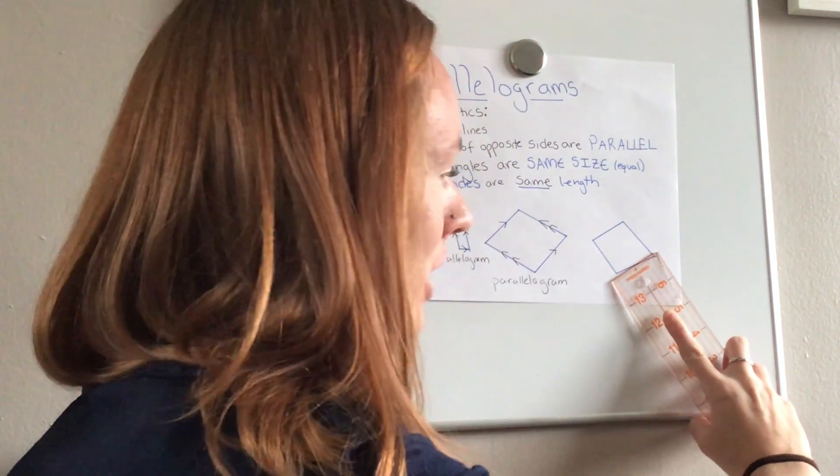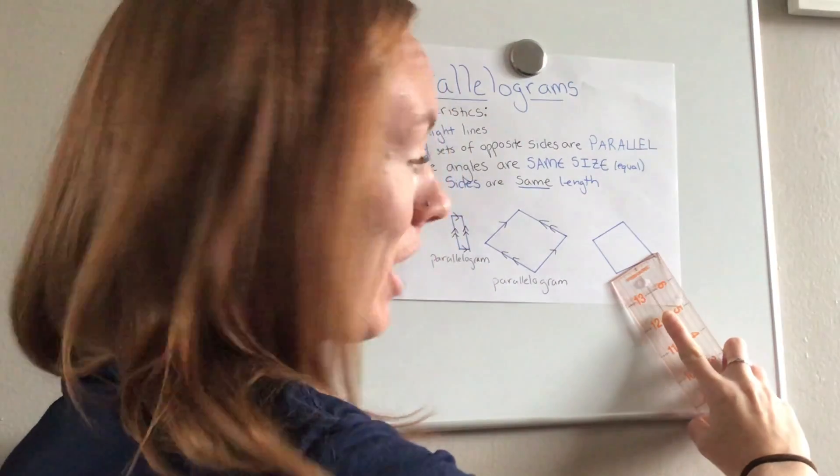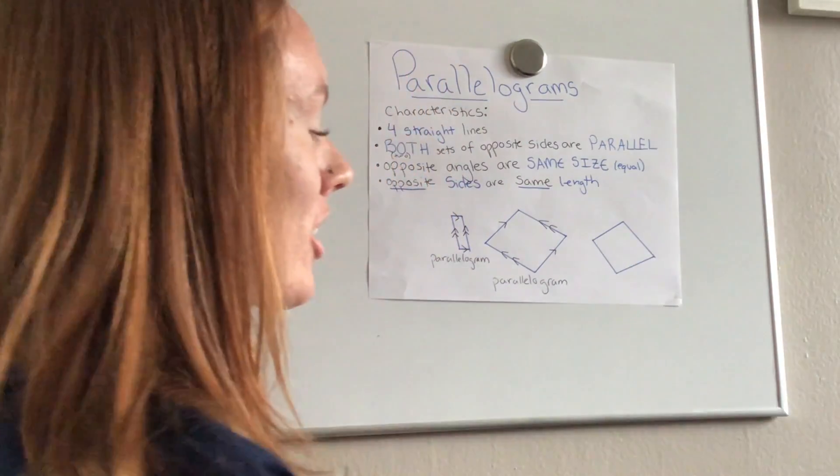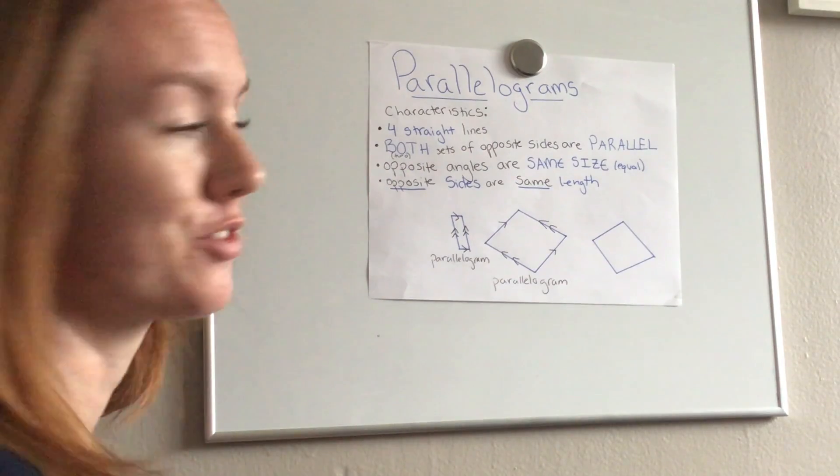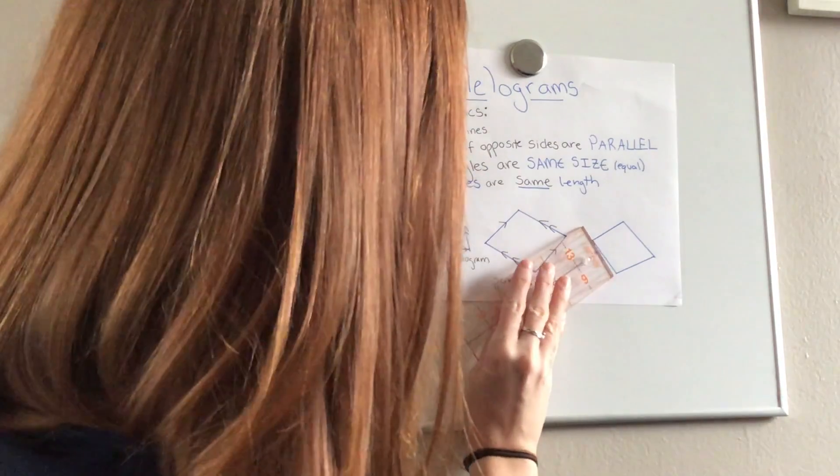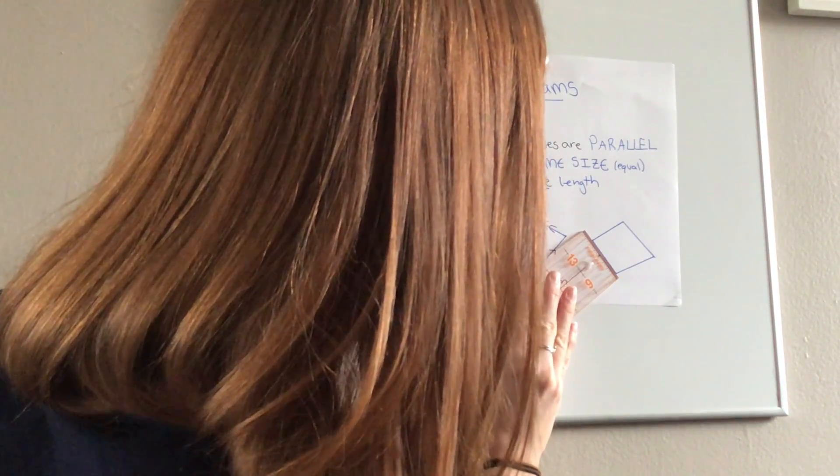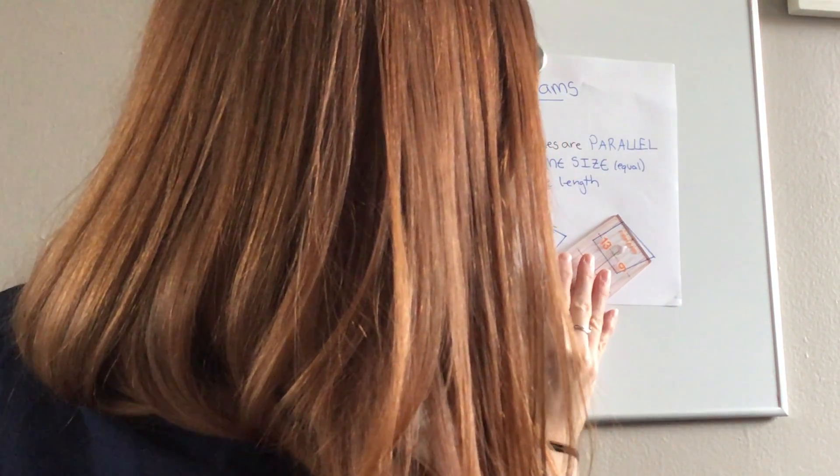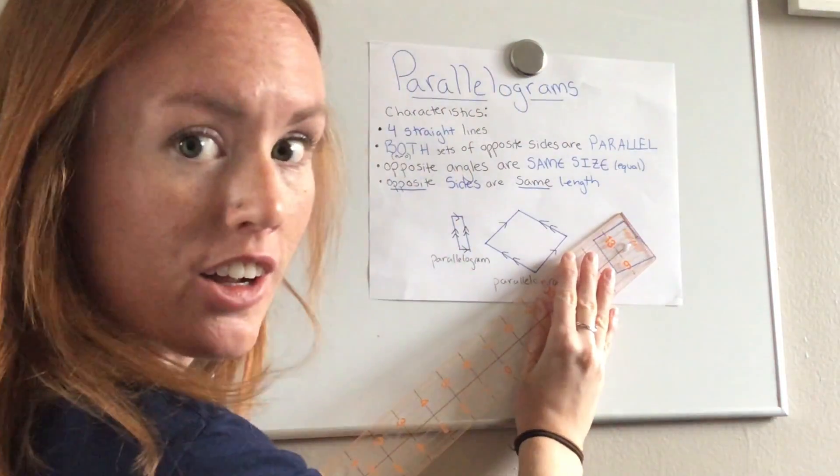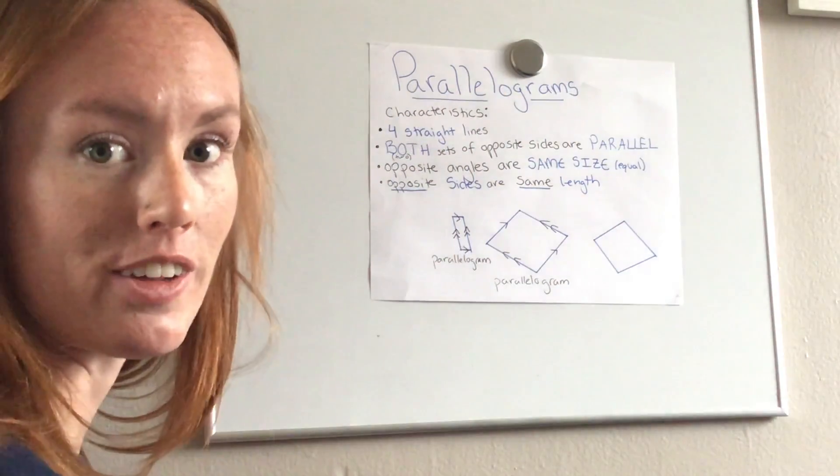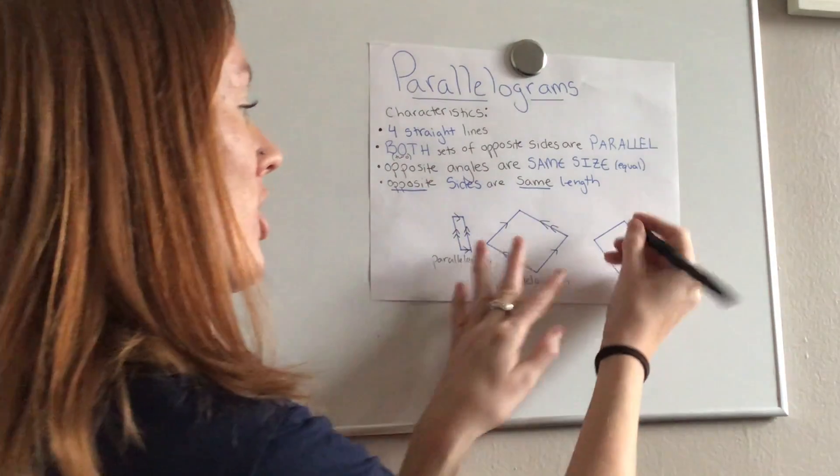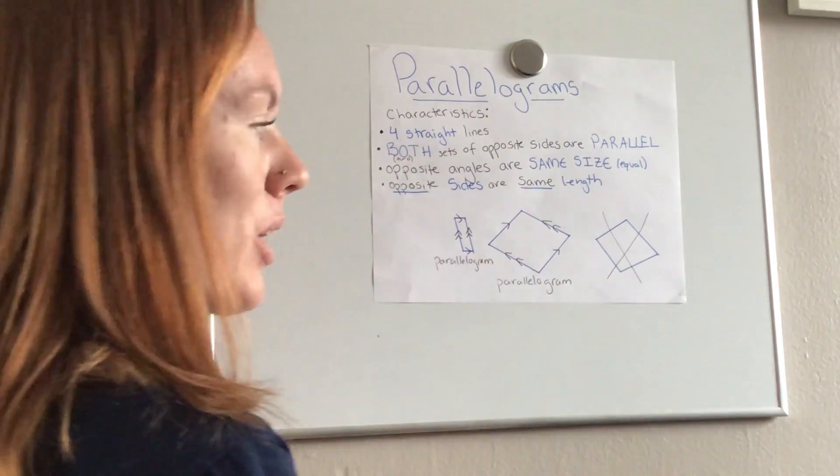But no, they don't line up. They're a little bit off which means they'll intersect and they're not parallel. Let's try our two side structures, line it up, move it slowly, and those two lines also don't line up perfectly. So those are also not parallel, so this structure is not a parallelogram.